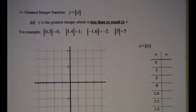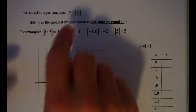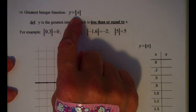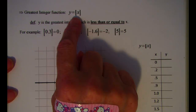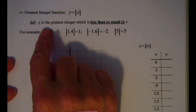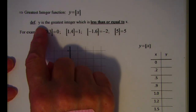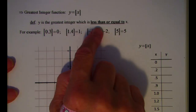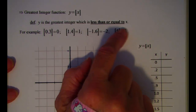In this video we will be talking about the greatest integer function. The symbol we'll be using is the two brackets on the left and the two brackets on the right. The definition of the greatest integer function is: y is the greatest integer which is less than or equal to x.